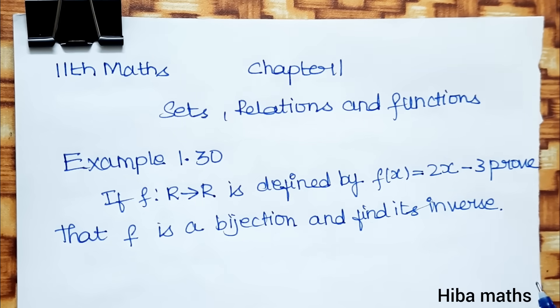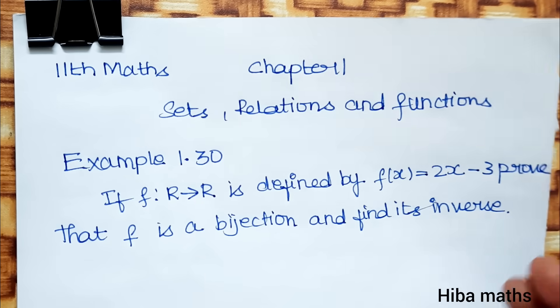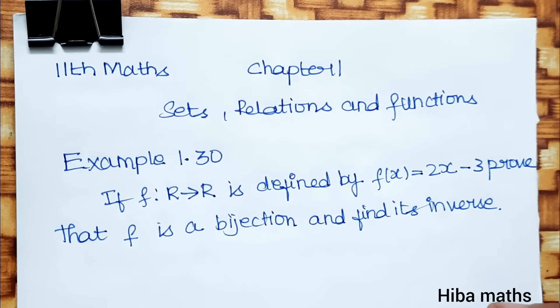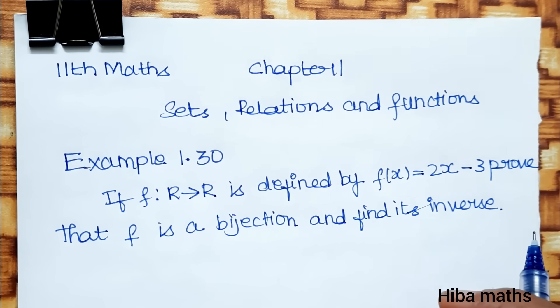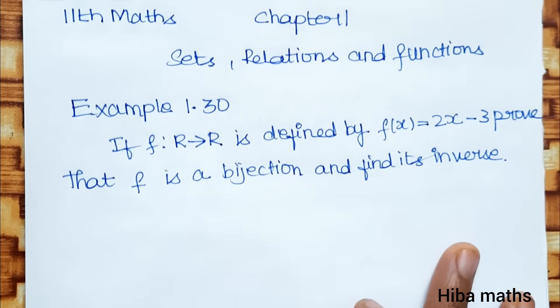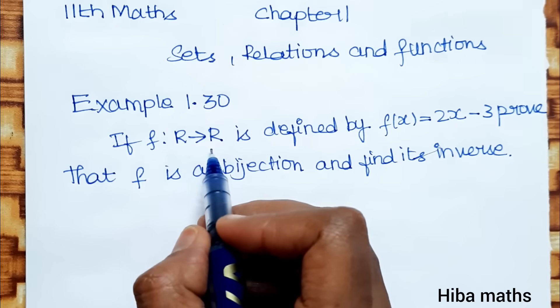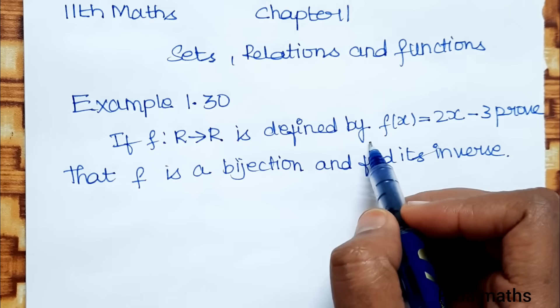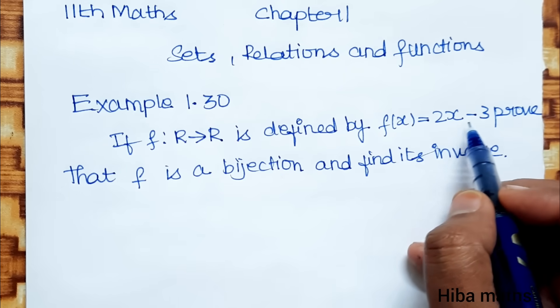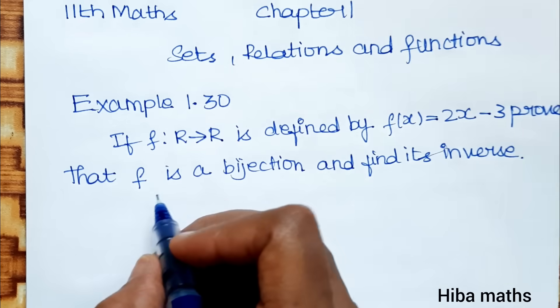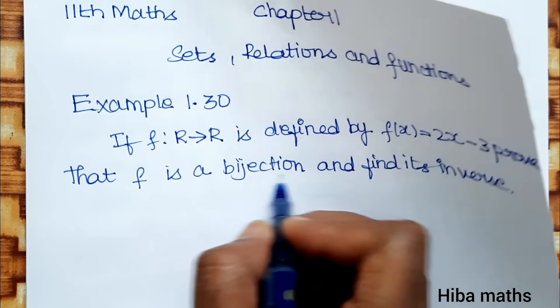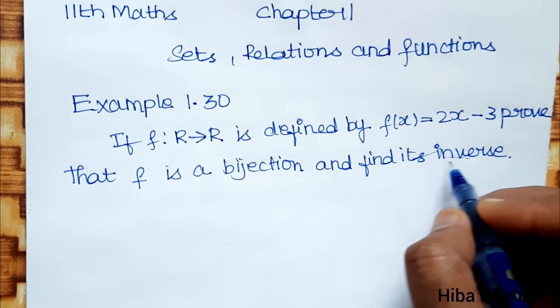Hello students, welcome to Hiba Maths, 11th standard mathematics, Chapter 1: Sets, Relations and Functions. Example 1.30: If f: R → R is defined by f(x) = 2x - 3, prove that f is a bijection and find its inverse.